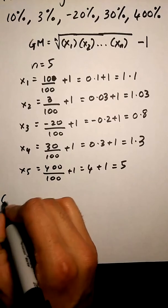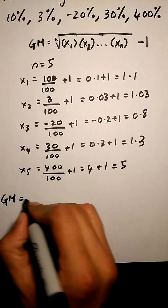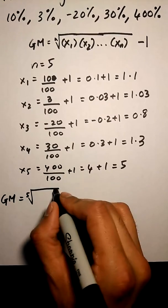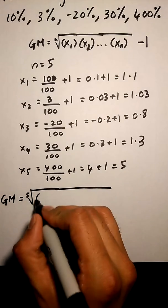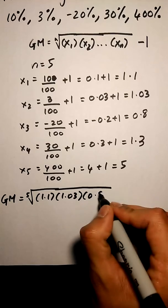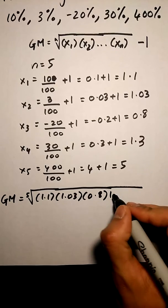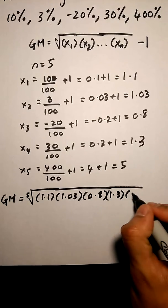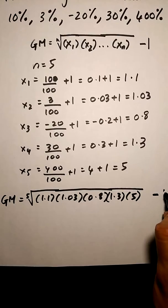GM equals 5th root of 1.1 times 1.03 times 0.8 times 1.3 times 5, and then minus 1 outside the root.